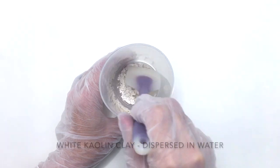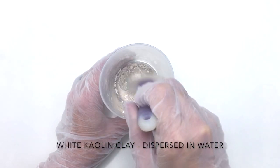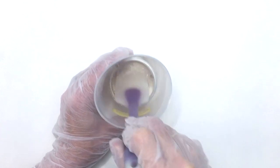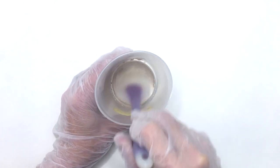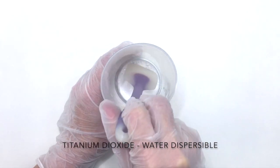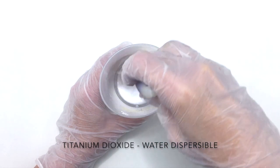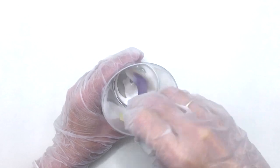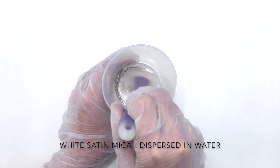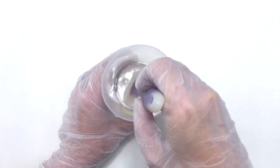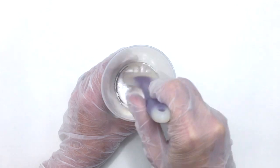The other plan for this soap is to test three white colorants. This is white kaolin clay dispersed in water. Next is water dispersible titanium dioxide. And finally, white satin mica also dispersed in water. Yes, you can mix your micas in water. Oil works better, but you can try it out and see if it works for you.